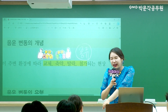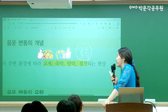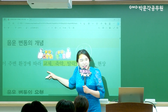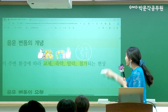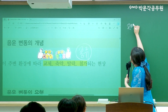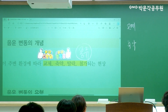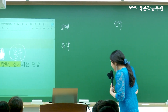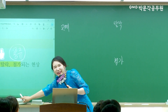외우는 방법이 있습니다. '고추탈출'로 외우세요. 교체의 '교', 축약의 '추', 탈락의 '탈', 첨가. 이렇게 네 가지의 유형으로 음운 변동 유형이 나타나게 됩니다.